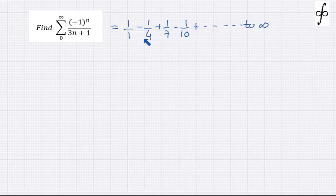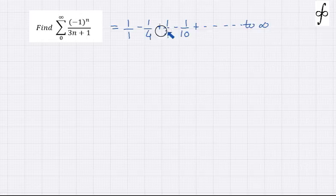So we need to use the log series here. Another thing is that there is a periodicity of 3 — a jumping of 3 — so we need to use the concept of cube root of unity here along with the log series.